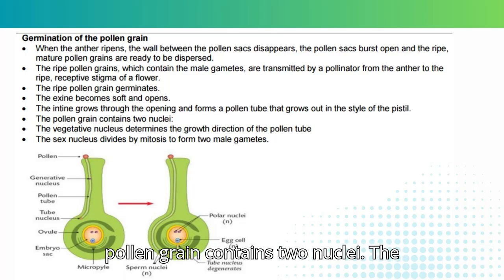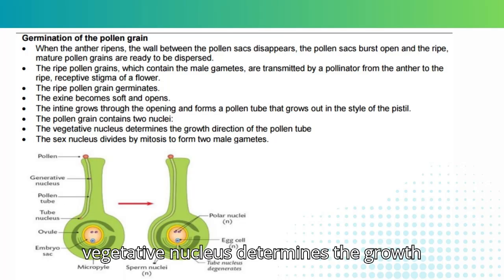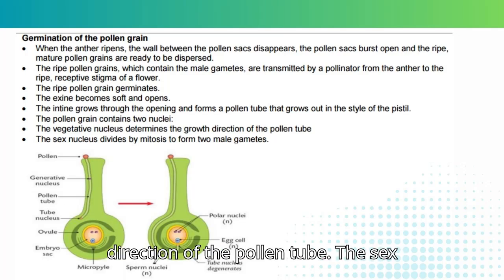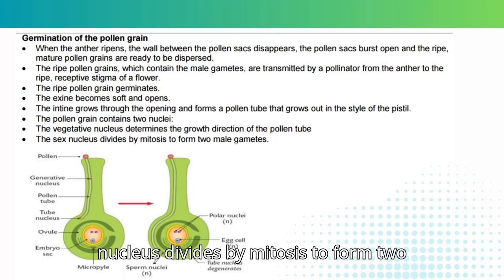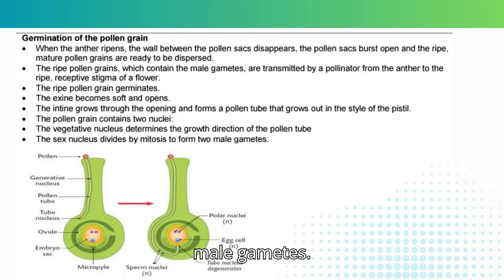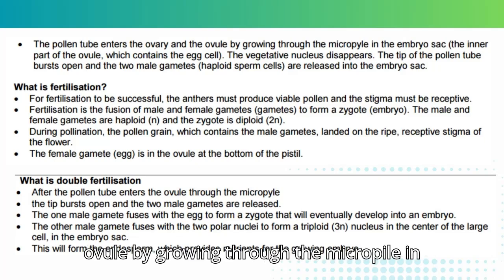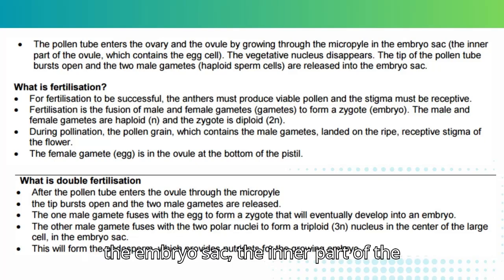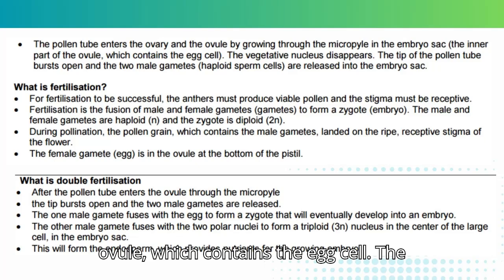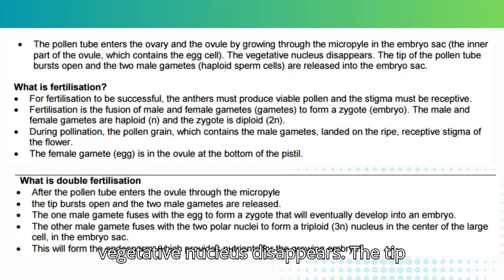The pollen grain contains two nuclei. The vegetative nucleus determines the growth direction of the pollen tube. The sex nucleus divides by mitosis to form two male gametes. The pollen tube enters the ovary and the ovule by growing through the micropyle into the embryo sac — the inner part of the ovule which contains the egg cell. The vegetative nucleus then disappears.